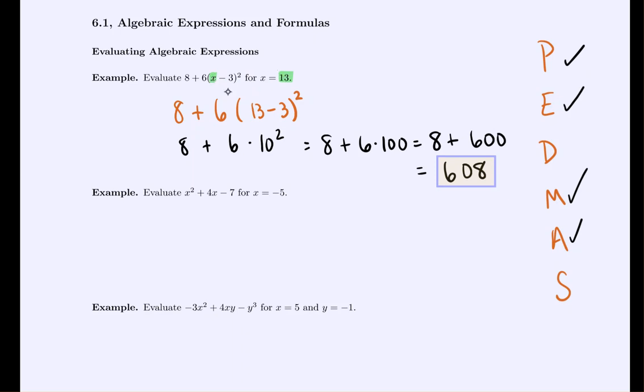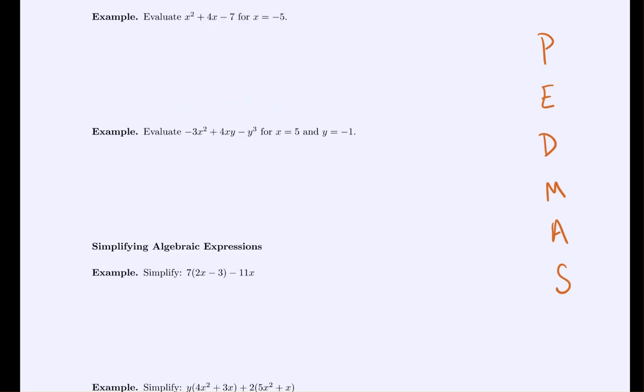So you substitute for every x value there is and then simplify using the order of operations. Let's take a moment to evaluate the next expression. I recommend you pause the video at this moment, work through this example, and then unpause to check your work.